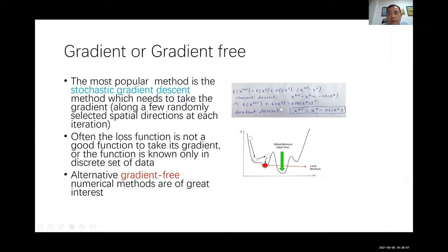In gradient descent, x_{k+1} = x_k minus the gradient of f. You iterate this. However, if you have a very high-dimensional problem, taking the gradient is very expensive since f is a summation of many loss functions. Another problem is that gradient descent can get stuck at a local minimum, when your goal is to find the global minimum.